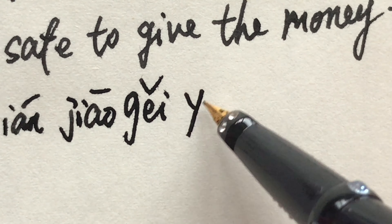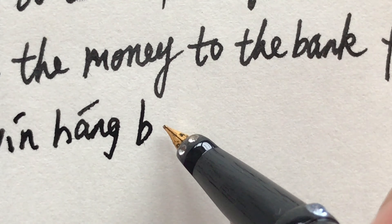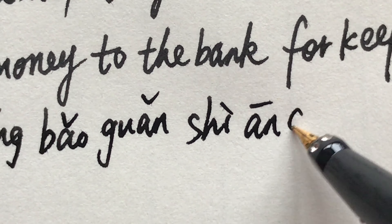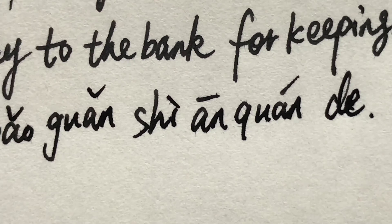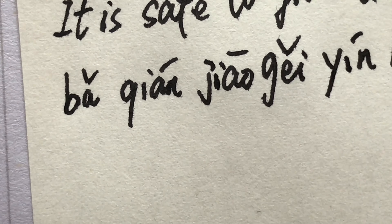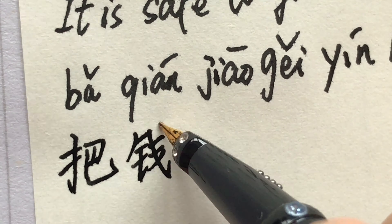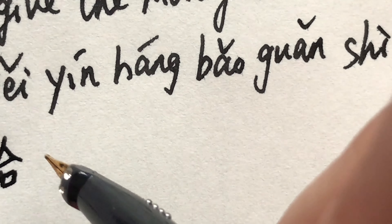Writing the sentence: 把钱交给银行 — 'give the money to the bank' — 保管 'for keeping', 是安全的 'is safe'. 把钱交给银行保管，是安全的.